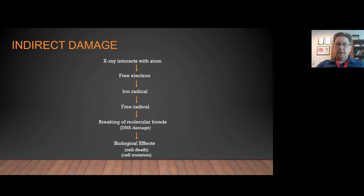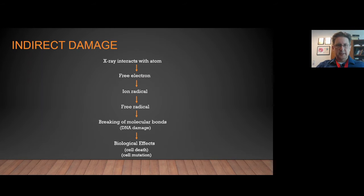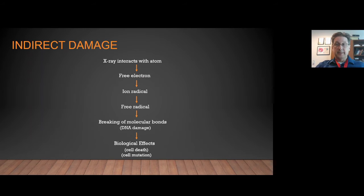For indirect damage, the process is a little more complicated. Our x-ray interacts with an atom, creating a free electron through the ionization process. This free electron can then interact and create an ion radical. This ion radical then interacts, creating free radicals, and these free radicals then attack our biologically sensitive molecule's DNA and create damage — molecular bond breaks within the DNA — which then can lead to biological effects.